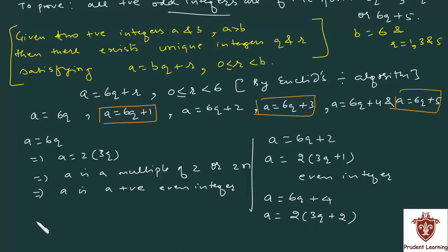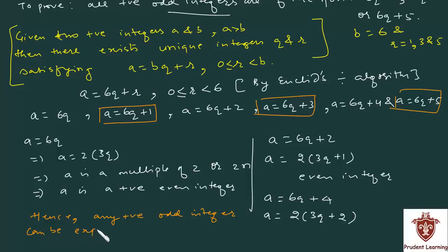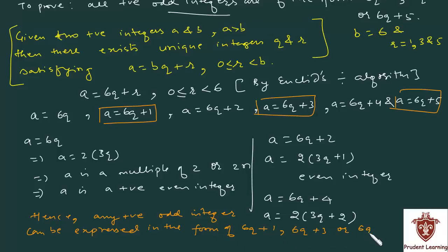Therefore, a cannot be of the form 6q plus 4 either. Thus, finally, we can conclude that any positive odd integer must be of the form 6q plus 1, 6q plus 3, or 6q plus 5, since the remaining forms represent even integers.